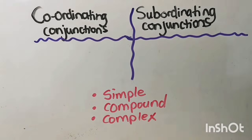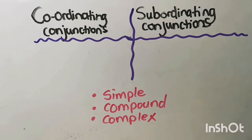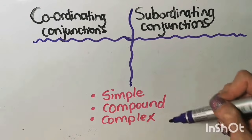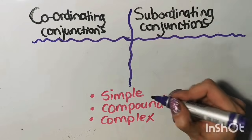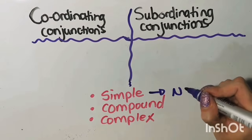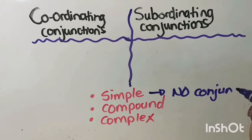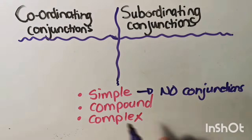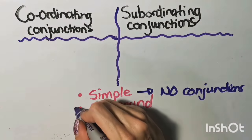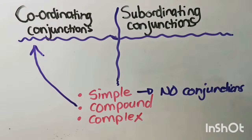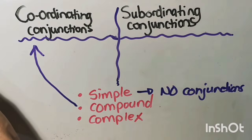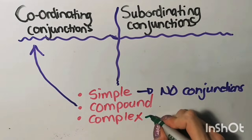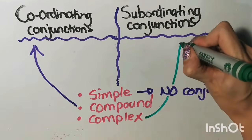And depending on the number of conjunctions and the type of conjunctions in the sentence, then we will see if it will be a simple, a compound, or a complex sentence. If there are no conjunctions in the sentence whatsoever, then it is a simple sentence. If we have only coordinating conjunctions in the sentence, it is a compound sentence. And if we have only subordinating conjunctions in the sentence, it is a complex sentence.